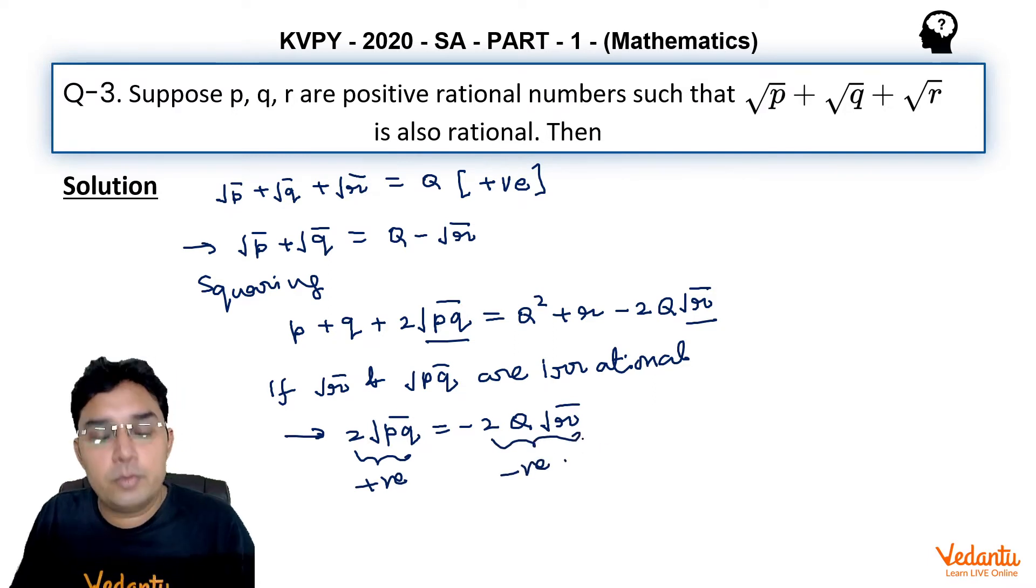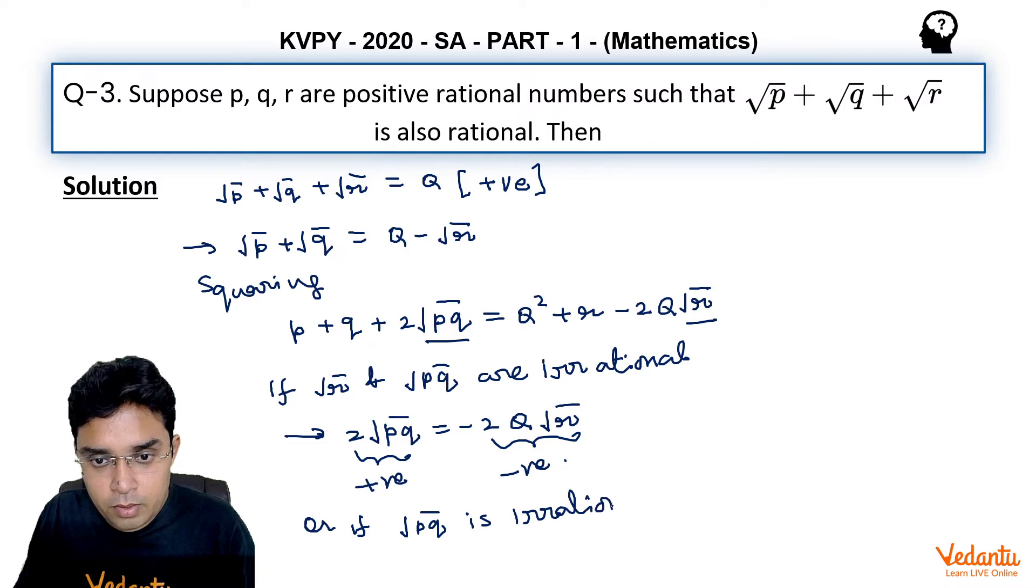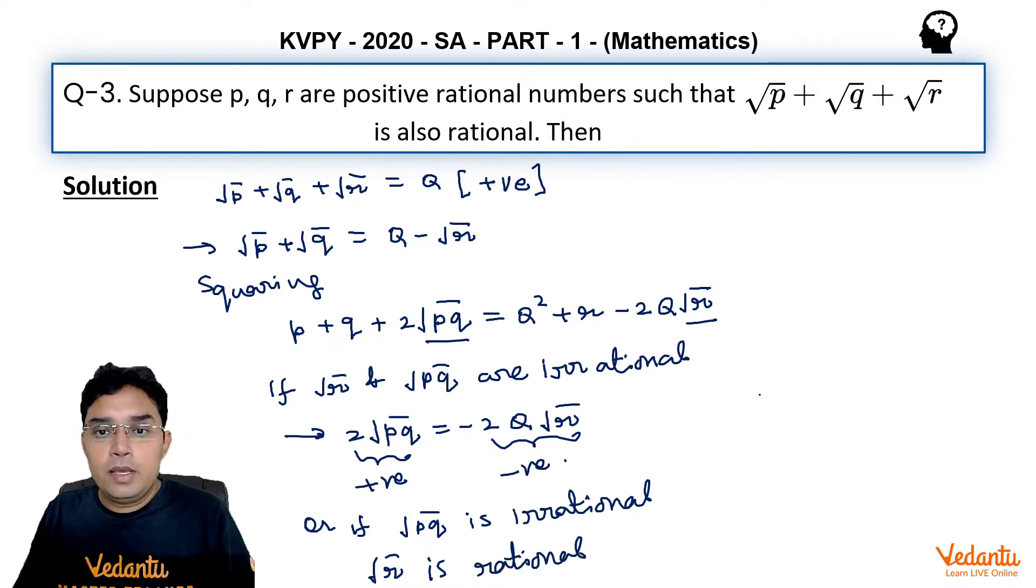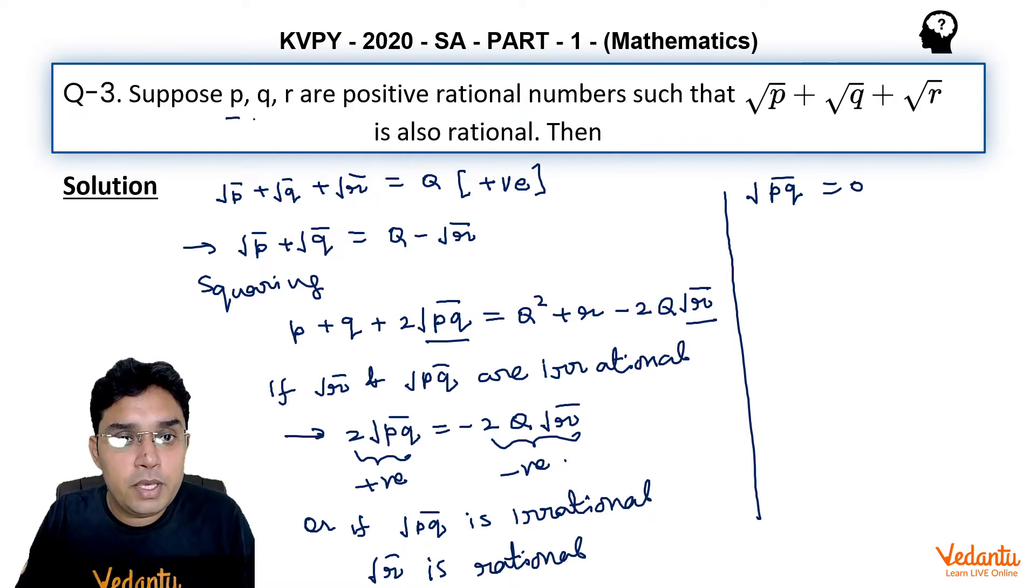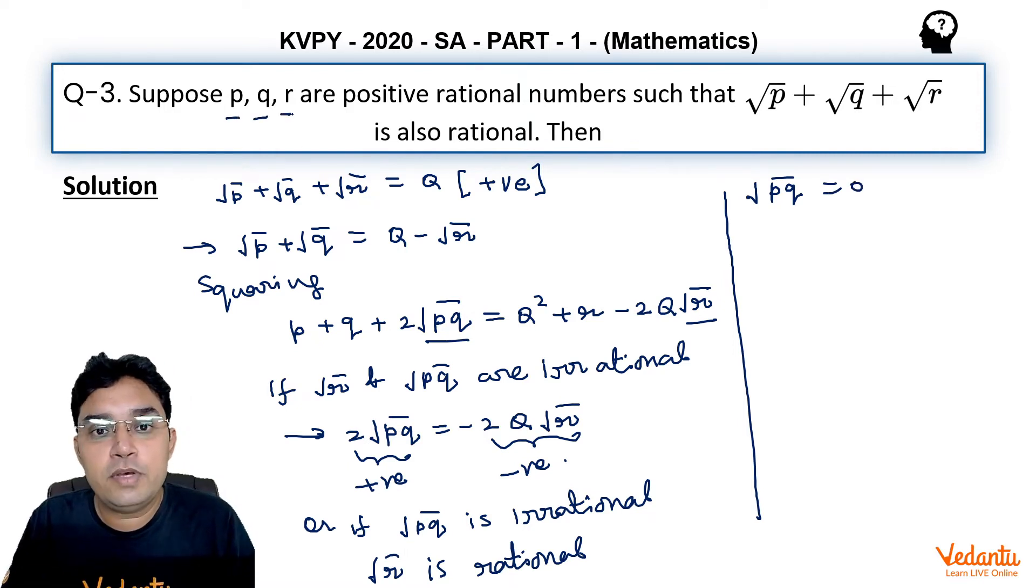Now maybe we could have taken that only √pq is irrational and √r is rational. In that case, we will be comparing √pq with zero only, because on the right-hand side everything has become rational. So √pq will become equal to zero, but that is not possible because p and q are positive rational numbers.